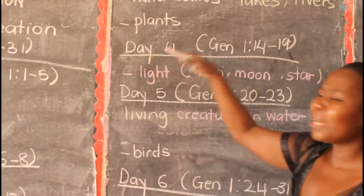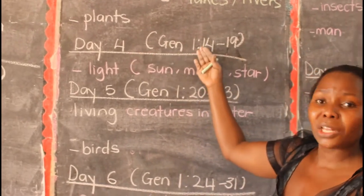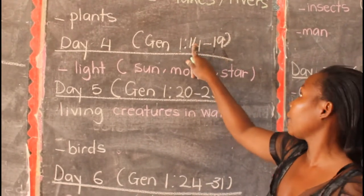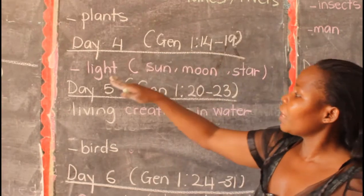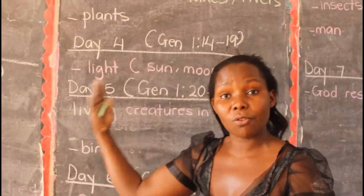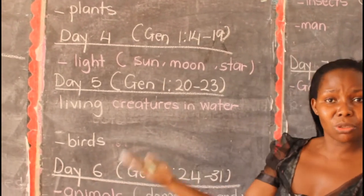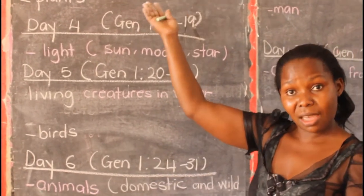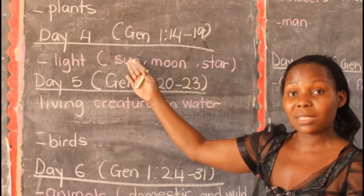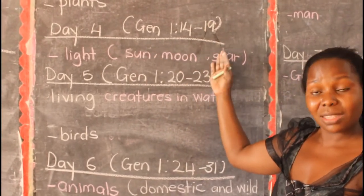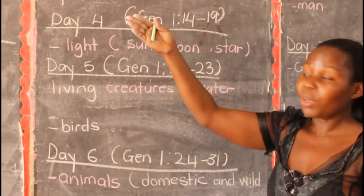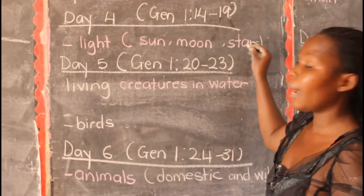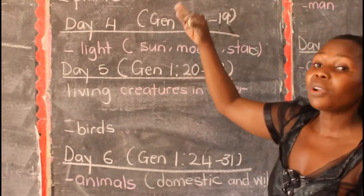On the fourth day, what did God create? Go to Genesis chapter 1, from verse 14 to verse 19. God created light — the sources of light, the things which give us light. During the day, God created the sun to help us see. God created the moon and the stars to help us at night. When it is dark, we can easily see if the moon is up there with the stars. These were all created by God on the fourth day.